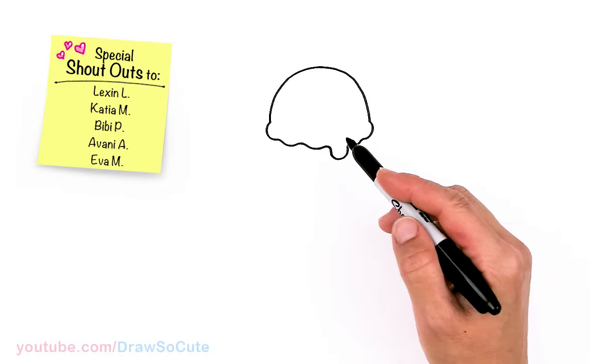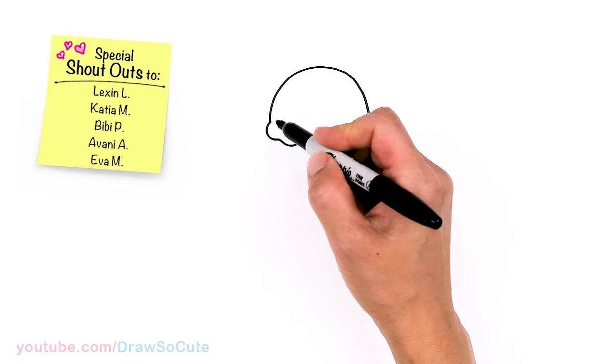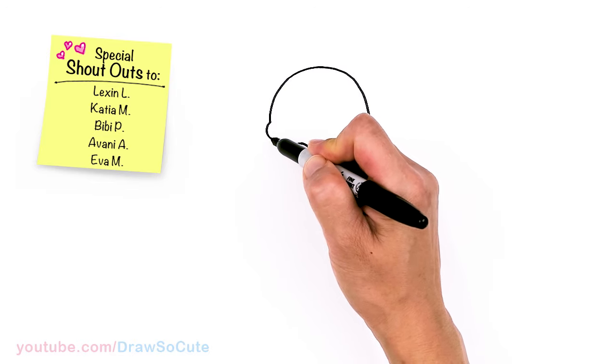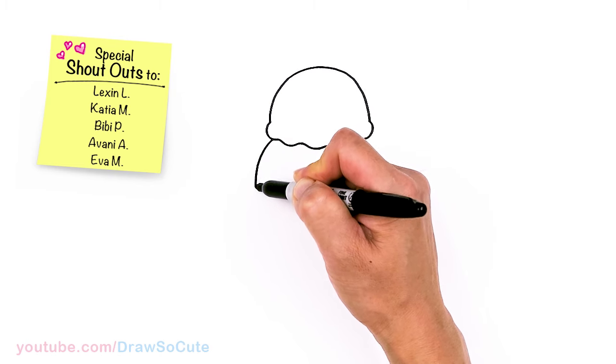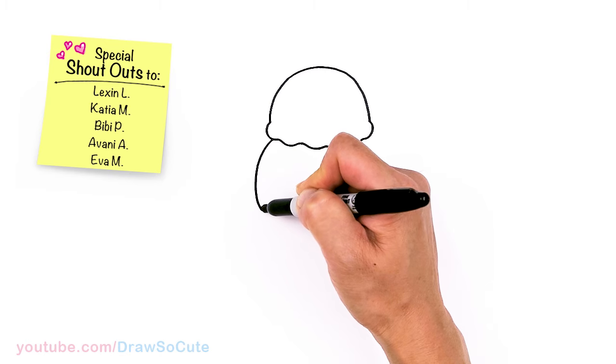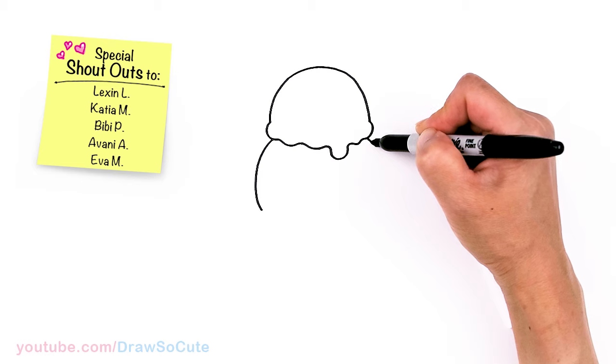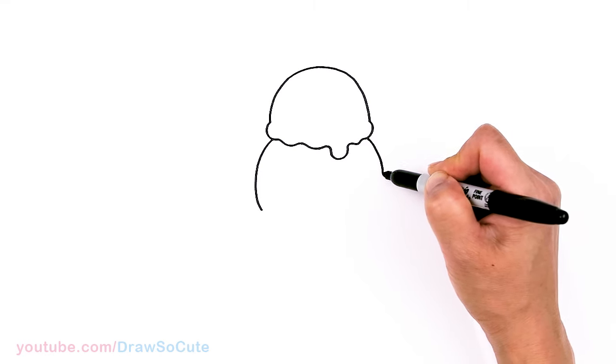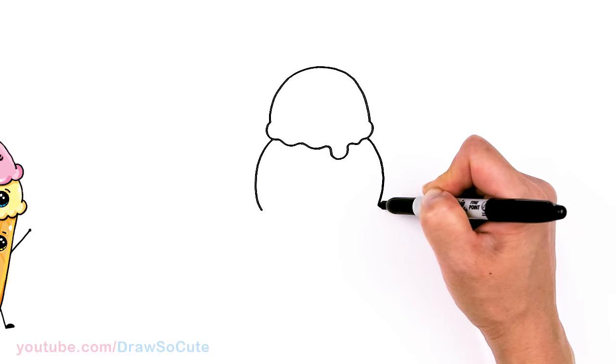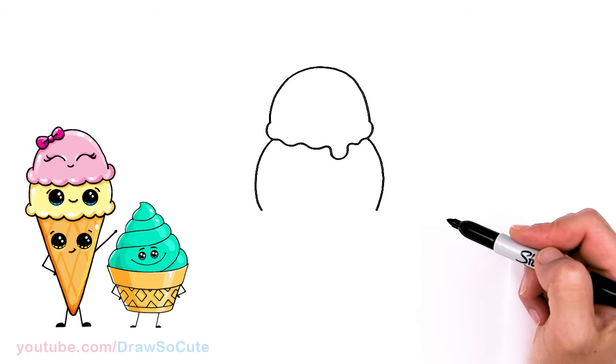So we have our first scoop and since two scoops is better than one, let's draw another one right here. So right at the bottom we're gonna come about right here and we're just gonna draw a big curve. So this scoop I'm making a lot bigger. So let's say about right here and same thing on the other side. So your goal is just to try to center this bottom scoop right under this top scoop as much as possible.